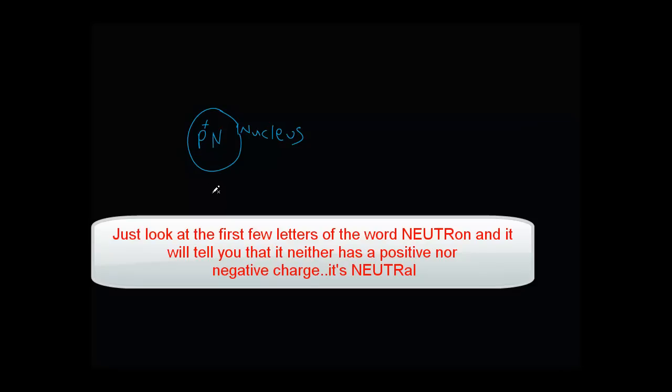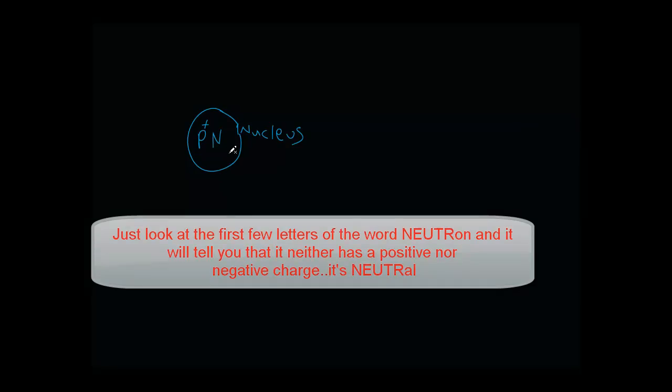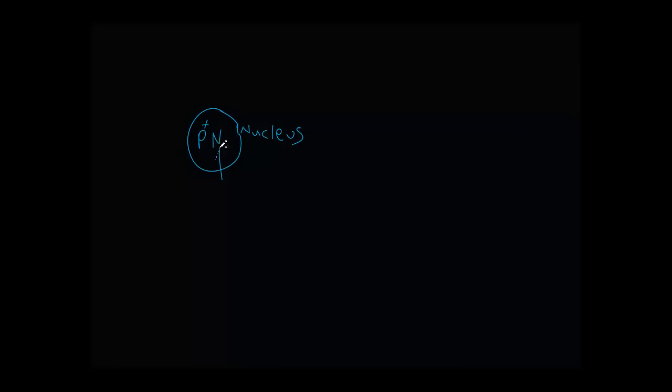Now protons and neutrons both weigh about the same and these guys are going to be pretty heavy. So we'll just say that in terms of weight, protons and neutrons are going to be heavy. So both protons and neutrons are going to comprise the majority of the mass of the atom.